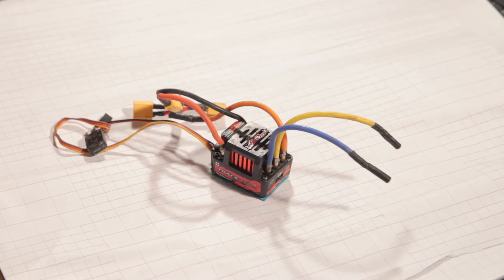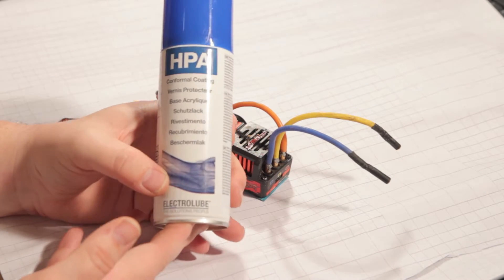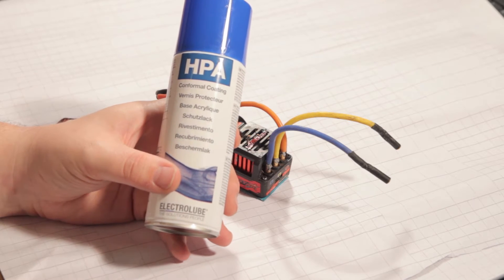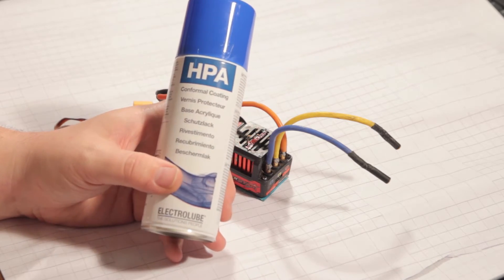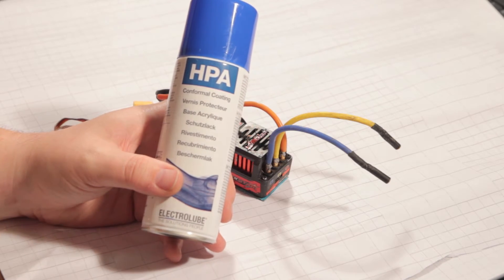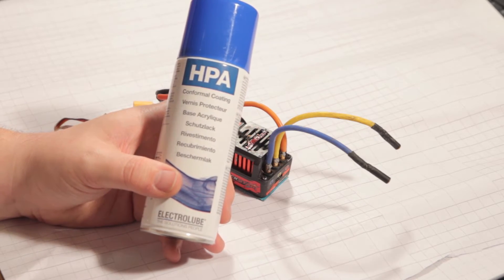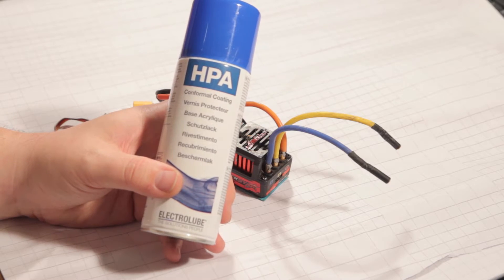Moving on, we have the product that we're going to use to waterproof it, and that's HPA conformal coating. This stuff's lethal. Make sure that you have a lot of ventilation in your area, otherwise you will get very high, basically, and it's not a good high. So make sure you have lots of ventilation, otherwise this product's fairly simple to use.